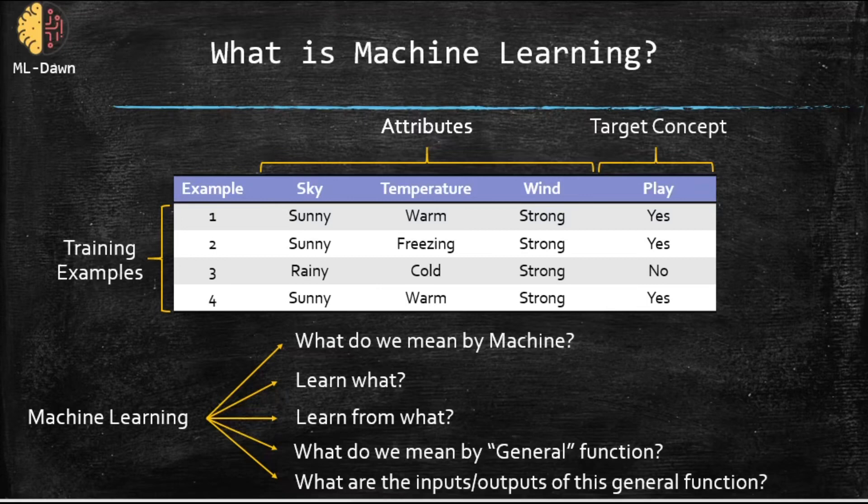So if I give a vector of values for these attributes to the machine, for example, let's say snowy, cold, weak for sky, temperature and wind, can the machine predict whether Joe is going to play or not? That's the question.